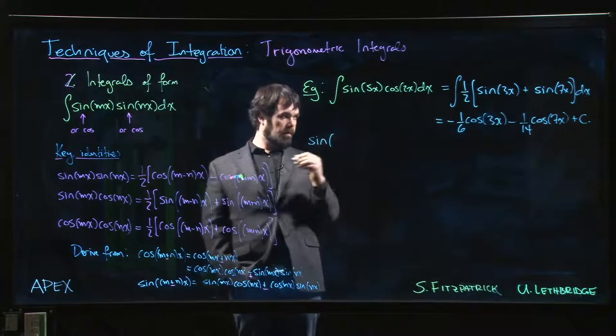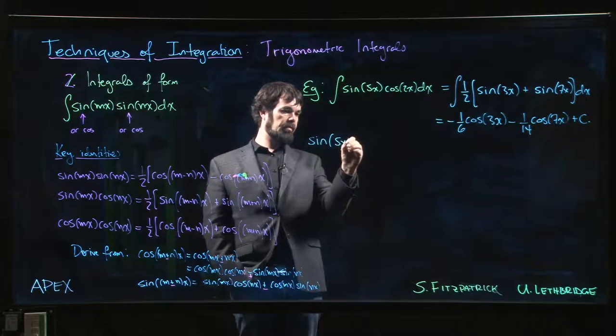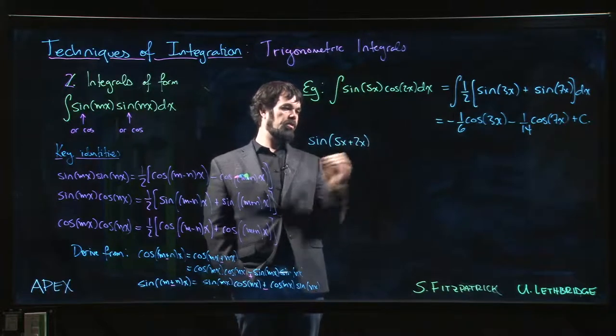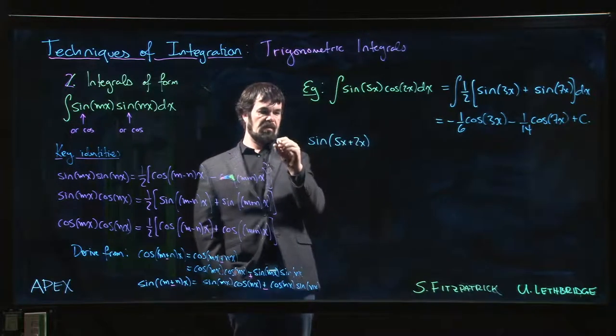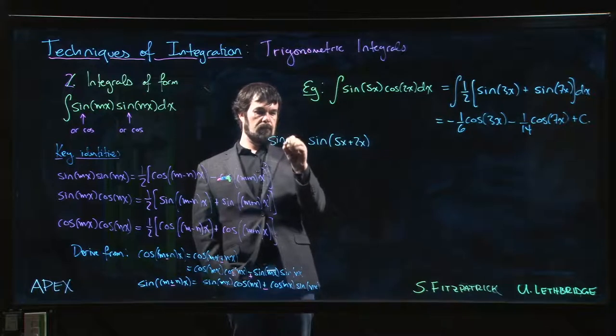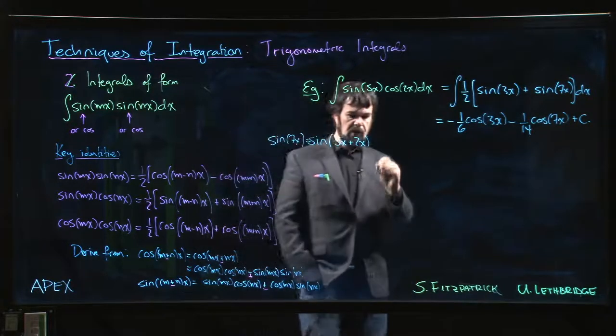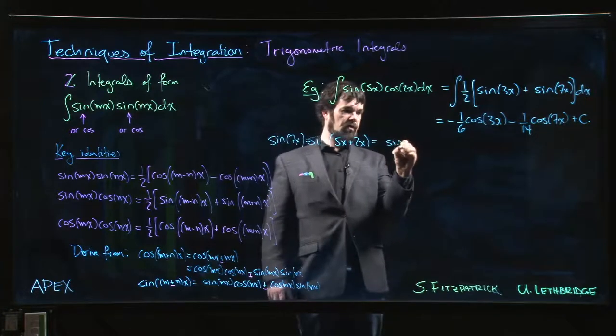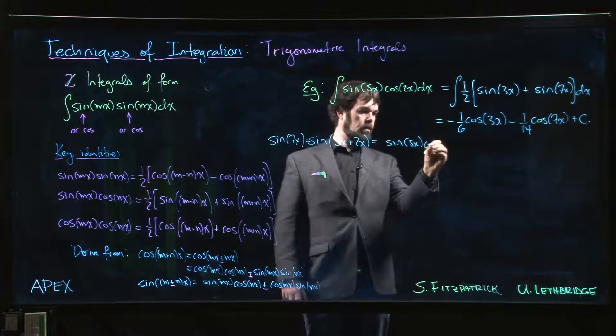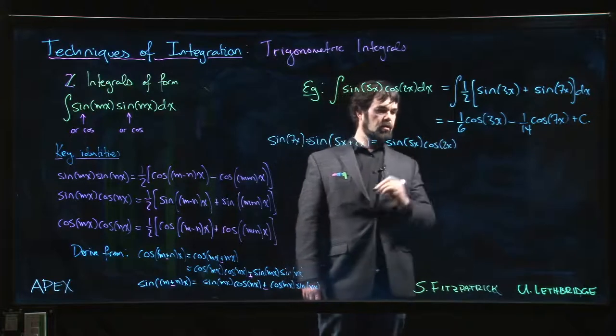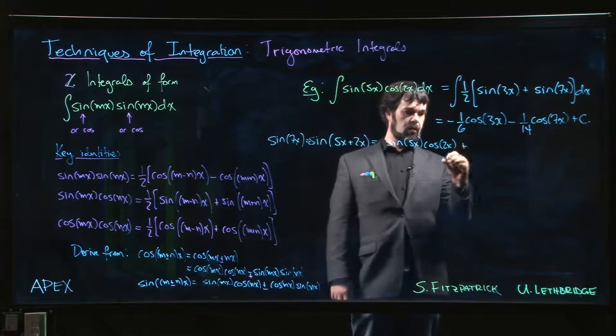Sine of 5x plus 2x—so that's sine 7x—so I say 5x plus 2x, so that's going to be sine 5x cos 2x plus...